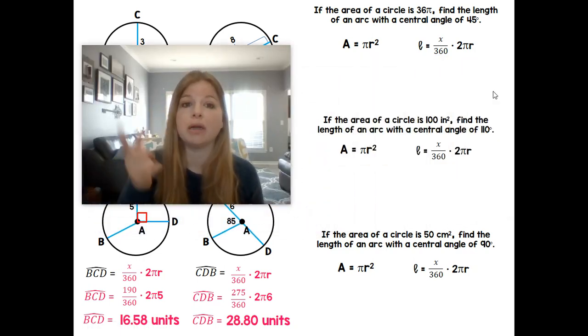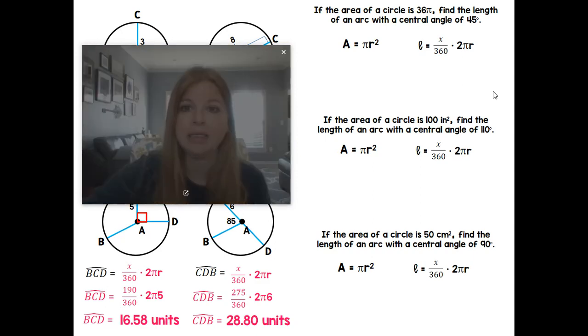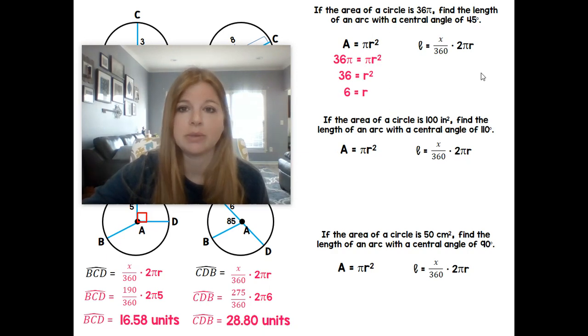Area of a circle. So we're going to plug in our area, find our radius, and then once we have our radius, we're going to plug it into our formula. So it says if the area of a circle is 36π, find the length of an arc with a central angle of 45. So 36π equals πr². Divide both sides by π. Take the square root. We have our radius is 6.